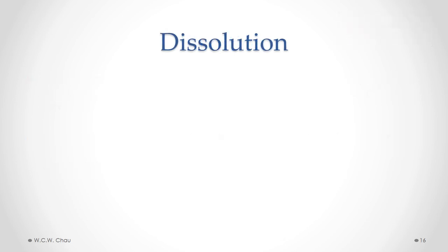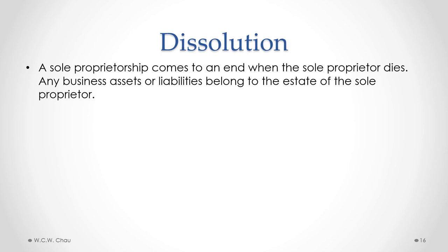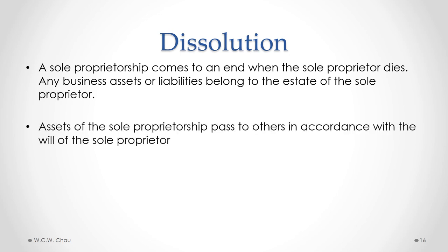Since a sole proprietorship is not a separate legal entity, when the sole proprietor dies, the sole proprietorship comes to an end — it cannot go beyond the death of the one owner. Any business assets or liabilities that exist at the time of the sole proprietor's death are automatically passed on to the estate of the sole proprietor. The estate will take care of paying those liabilities and any other liabilities the sole proprietor had at the time of death. If any assets remain after those debts are paid, those assets will be transferred to the people named in the sole proprietor's will.